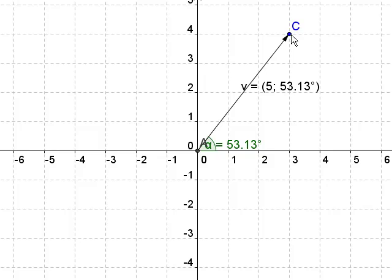So here's an example. I have this vector that has a magnitude of 5 units and it has an orientation of 53.13 degrees. And if I looked at that in Cartesian form, it's 3, 4.